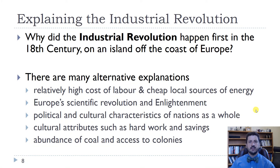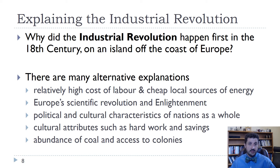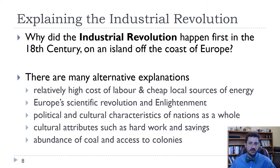The question we're trying to answer with this model is: why did the Industrial Revolution happen in the 18th century, and why did it happen in England? Why didn't it happen in China in the 15th century, or in India in the 10th century, or in Africa in the 7th century? Why didn't it happen in any of these places except for England in the 18th century?